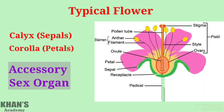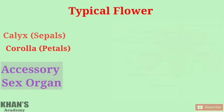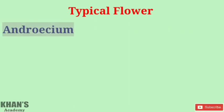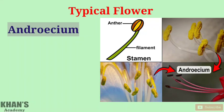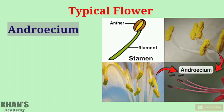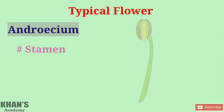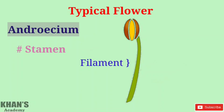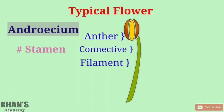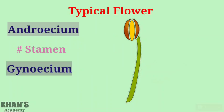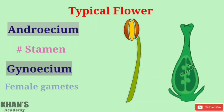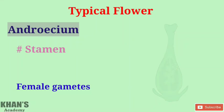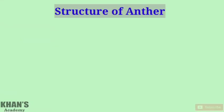Among the floral whorls, the androecium is the male reproductive floral whorl and it produces male gametes. The individual member of the androecium is called a stamen. A stamen consists of a filament, connective, and anther. The gynoecium is the female reproductive floral whorl and produces female gametes.